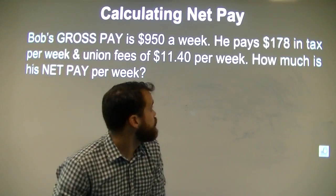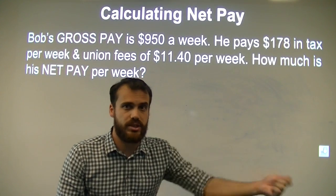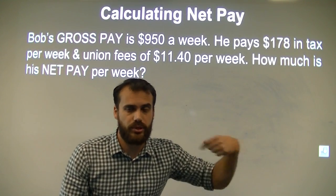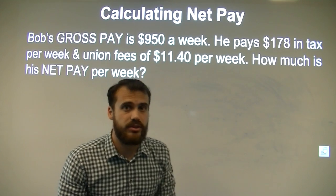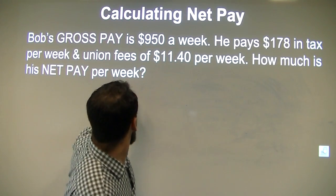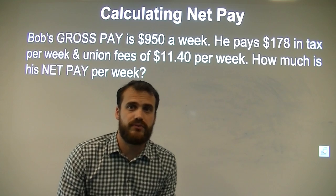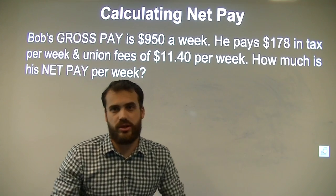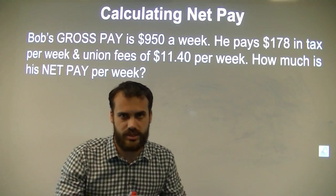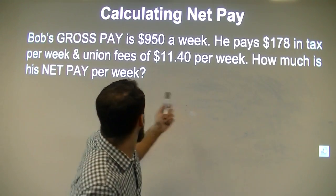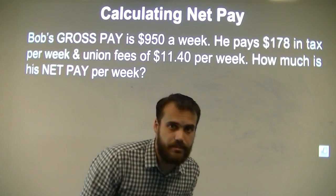Bob's gross pay is $950 a week. So $950 a week — that's what his employer would like to pay. He pays $178 in tax to the government and his union fees are $11.40 a week. How much is his net pay per week?